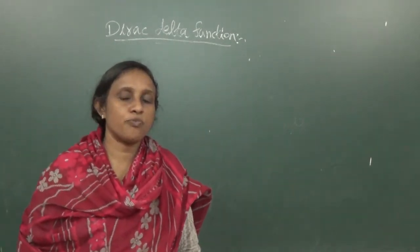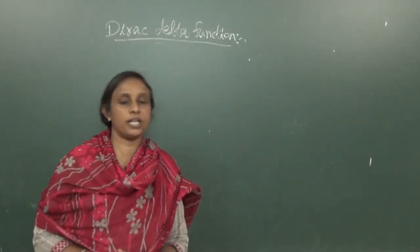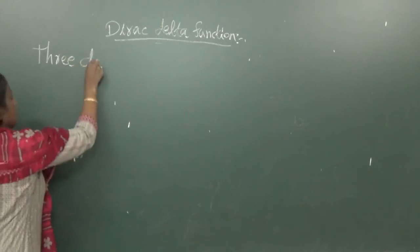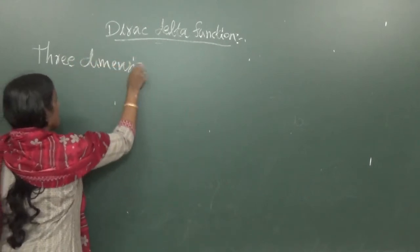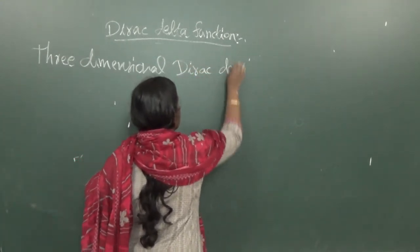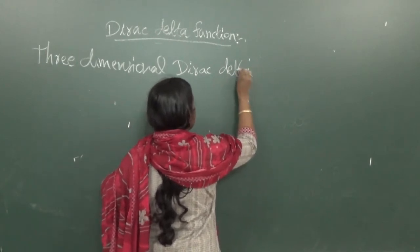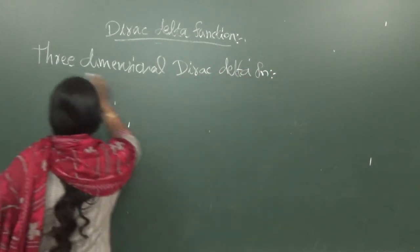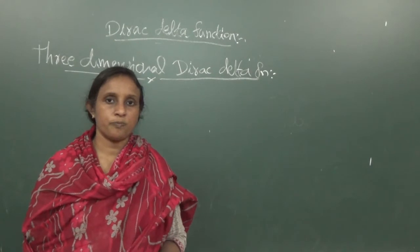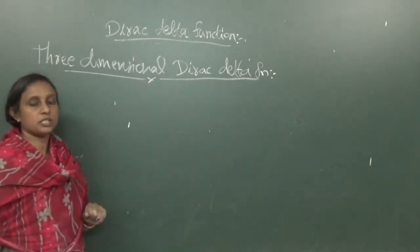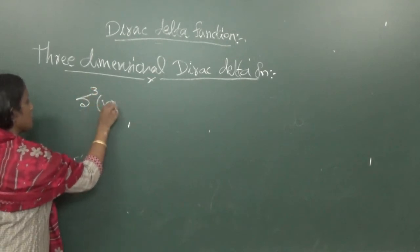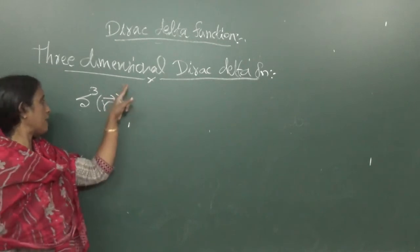We can extend the concept of the Dirac delta function to three dimensions. The three-dimensional Dirac delta function is written as δ³(r), which is defined as del cube r.